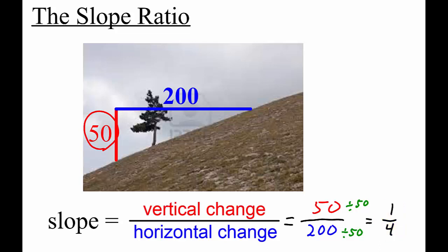Sometimes with real hills we use percents, so we could say this hill has a grade or a slope of 25%.